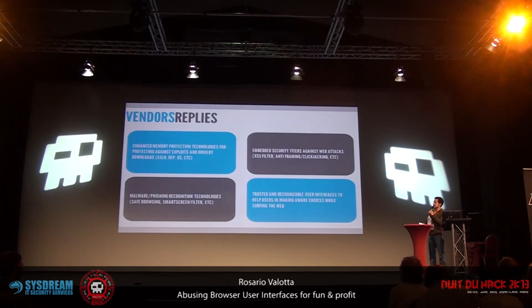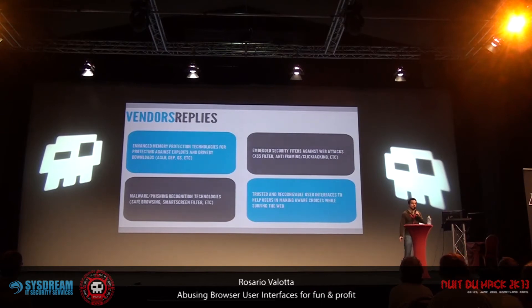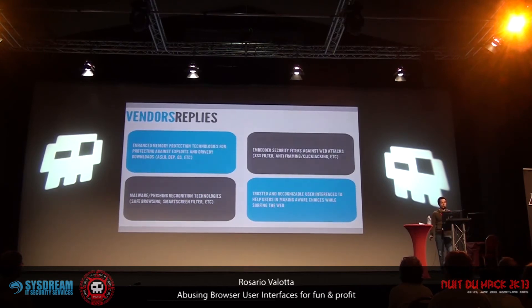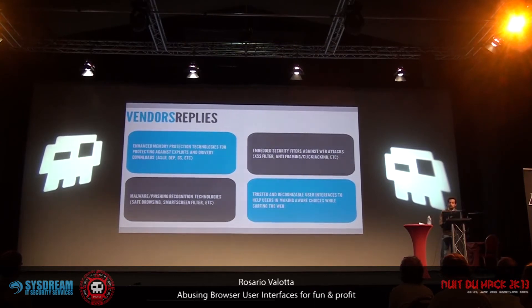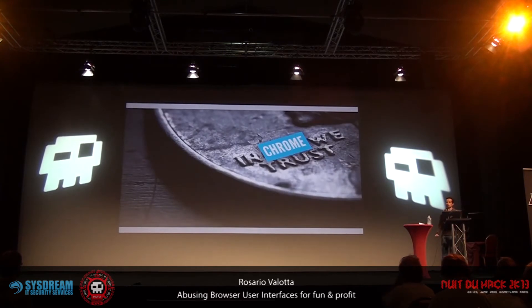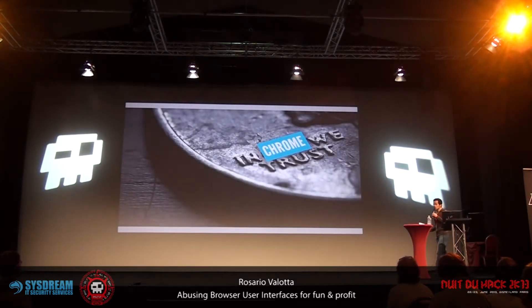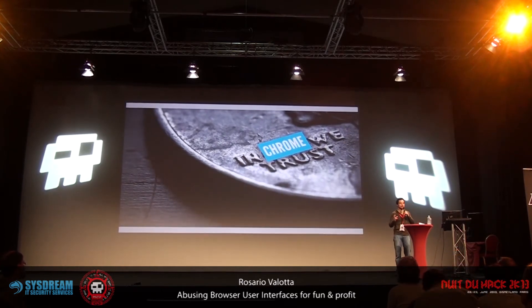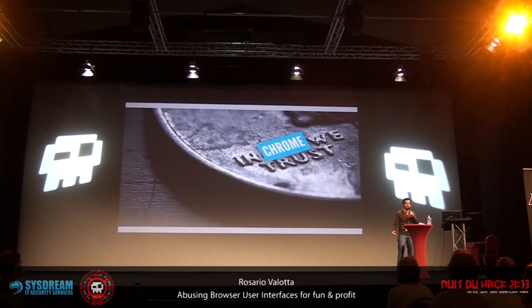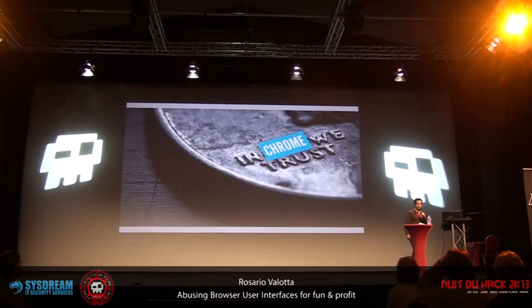A lot of effort has also been put into building trusted and recognizable browser user interfaces to help users make aware choices while surfing the internet. When talking about trusted and recognizable user interfaces, we are actually talking about Chrome — not Google Chrome, but the browser Chrome component. Chrome is the component of the browser that includes all the user controls, menus, pop-up dialogs, and notification bars that surround the web content itself, providing an interface between the user and the browser.